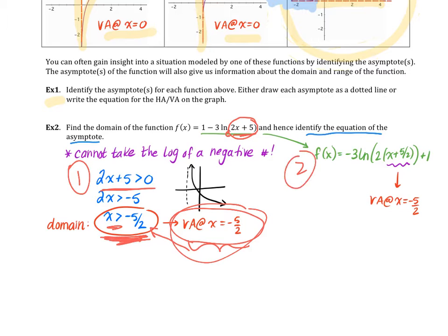Option number two for solving that problem is to factor out that horizontal dilation. You factor out the two and then you have left x plus five halves. If you set that equal to zero, you would find what your vertical asymptote is. So it's everything to the right of negative five halves for the domain. It's not asking for the domain, just your vertical asymptote.